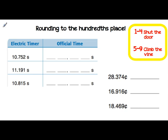When rounding to any place, we can always use the same rule: 1-4, shut the door; 5-9, climb the vine.